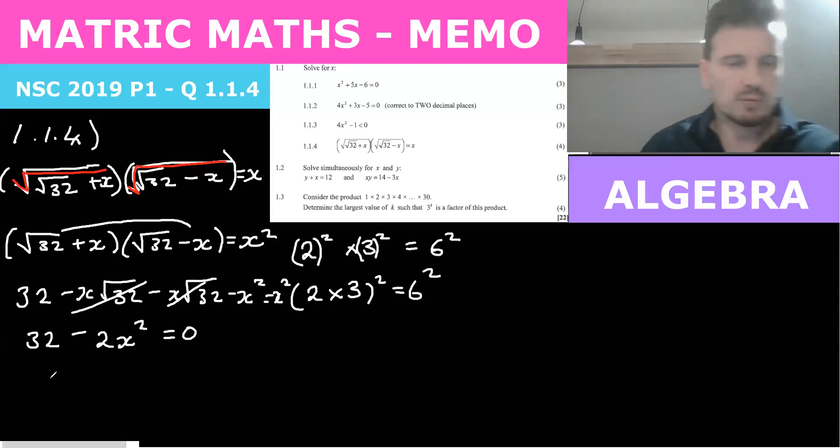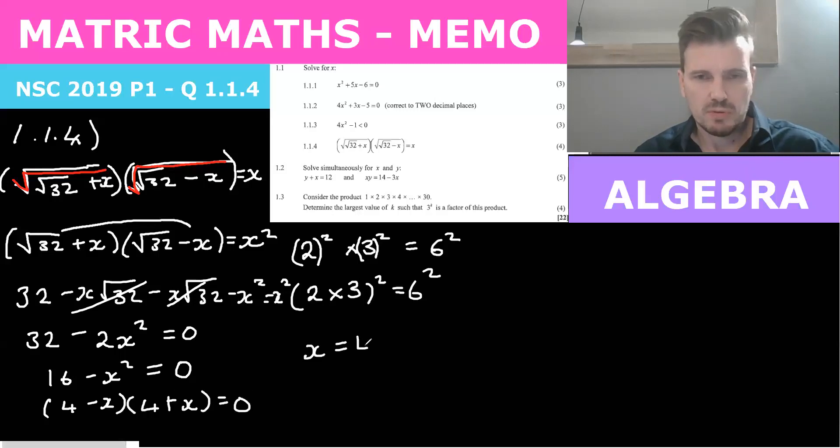So what we can do is we could divide by 2 and we get 16 minus x squared equals 0. And so these factorize to 4 minus x and 4 plus x equals 0. And so our answers are x equals 4 and x equals negative 4.